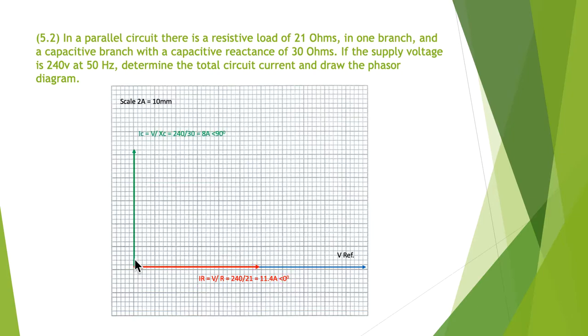Next I put in the capacitor current. We know the current is going to lead by 90 degrees for our capacitor. Current is the applied voltage divided by the Xc. So 240 divided by 30 gave me 8 amps at 90 degrees. So there's my two phasors on the diagram.